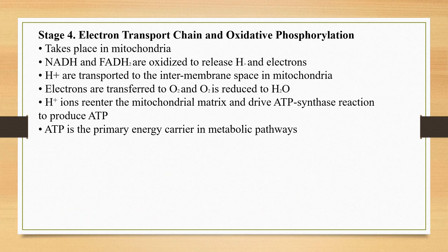The fourth stage of biochemical energy production is called electron transport chain and oxidative phosphorylation. The reactions here take place in the mitochondria. In the process of oxidizing acetyl-CoA, two reduced coenzymes are formed: NADH (nicotinamide adenine dinucleotide in the reduced form) and FADH₂ (flavin adenine dinucleotide in the reduced form).